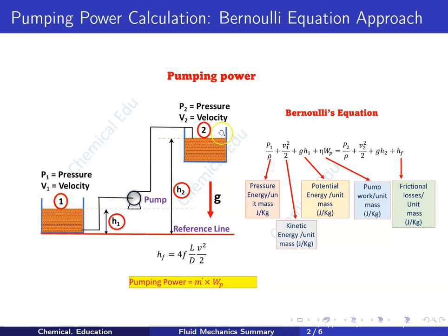Now, applying Bernoulli's equation between points one and two, the equation becomes: p1/ρ + v1²/2 + g·h1 + η·wp = p2/ρ + v2²/2 + g·h2 + hf, where η·wp is the pump work per unit mass and hf represents frictional losses.